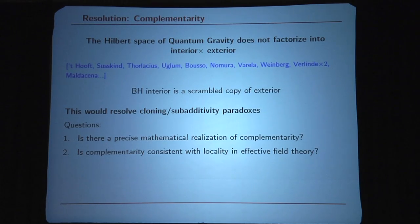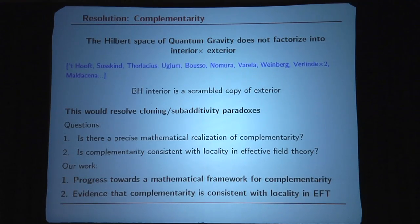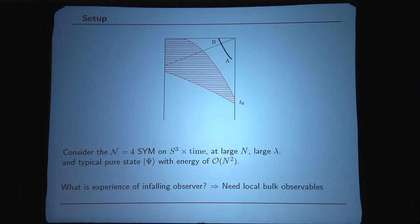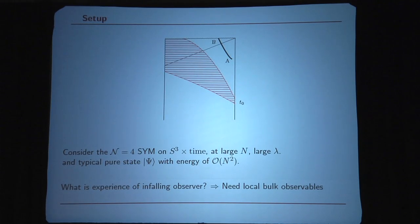I want to report some positive progress along these lines. We have made progress towards a mathematical framework which can describe complementarity, and we have given evidence that complementarity is consistent with locality in effective theory. The setup we have in mind is that we take some CFT like N=4 super Yang-Mills at large N and large lambda, take a typical pure state from the deconfined phase of the theory, wait for the state to equilibrate, throw in an observer at late times, and understand what happens to the infalling observer when he or she crosses the horizon.